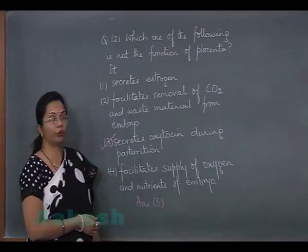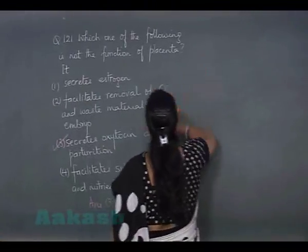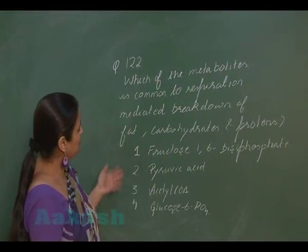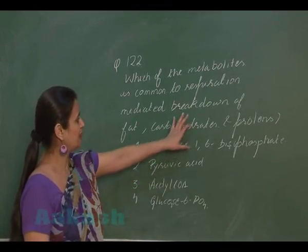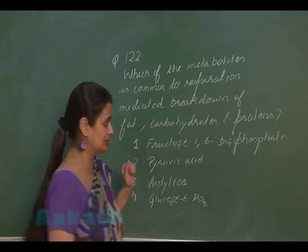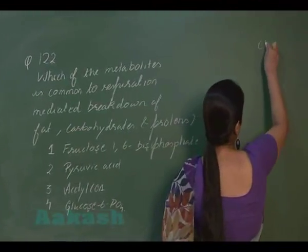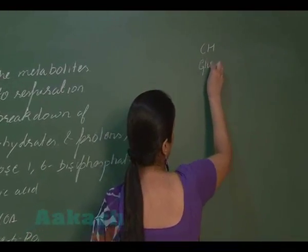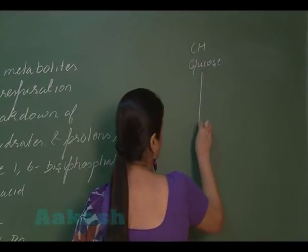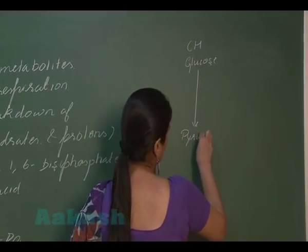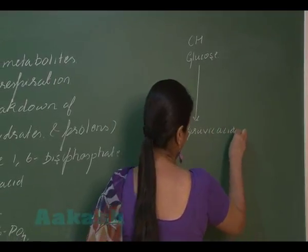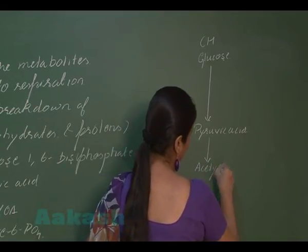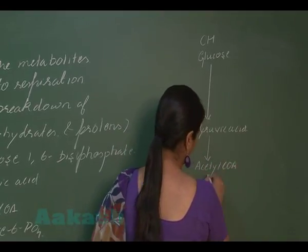Question 122: Which metabolite is common to the breakdown of fats, carbohydrates, and proteins? Looking at carbohydrate breakdown, the first step is glycolysis, where glucose undergoes breakdown through a series of reactions resulting in the formation of pyruvic acid.